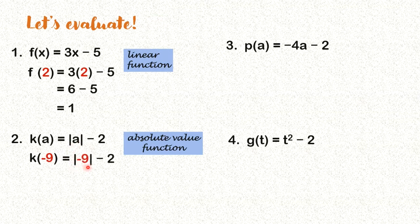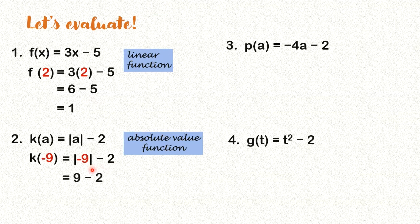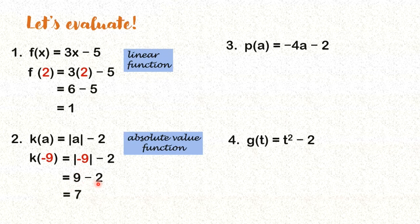So it will look like this: the absolute value of negative 9 minus 2. And what do we know about getting absolute values? Nagiging non-negative yung number. So itong negative 9 magiging positive 9. So what is 9 minus 2? We get 7.